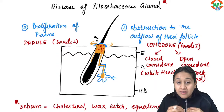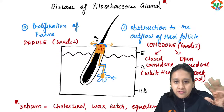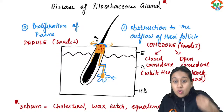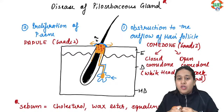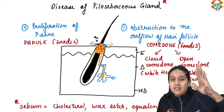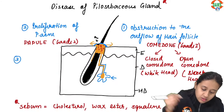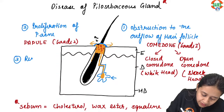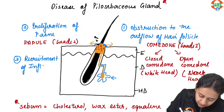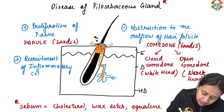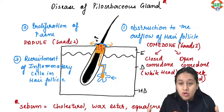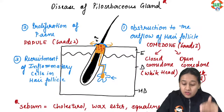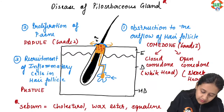The body responds to the bacterial presence by sending inflammatory cells to the site of bacterial collection. This is the third step in acne development: recruitment of inflammatory cells. The collection of inflammatory cells in the skin is called pus, and in the skin this forms a pustule — Grade 3 of acne.